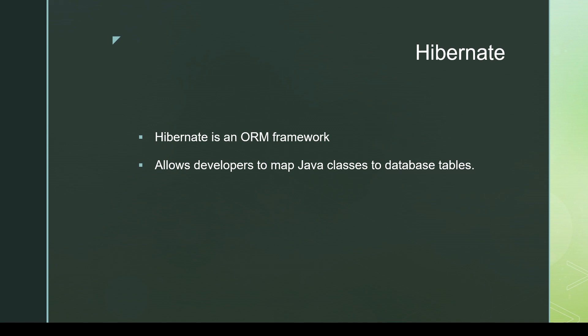If we talk about Hibernate, then Hibernate is an ORM framework — it is a framework that provides a way to map Java objects to database tables. Hibernate is widely used, it's a mature and stable framework, and most of the time it is the first choice for managing the persistence layer. In Hibernate we can define mappings between Java classes and database tables using annotations or XML configurations, and it offers many features like caching, lazy loading, persistence API, projections, searching, and more.